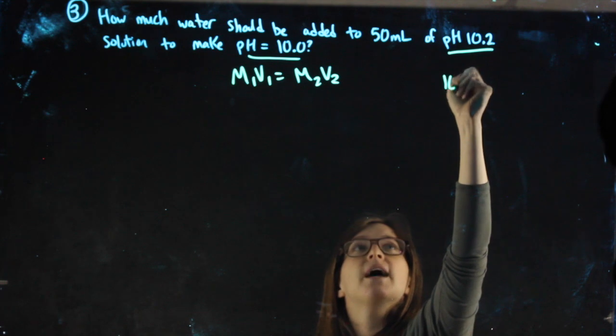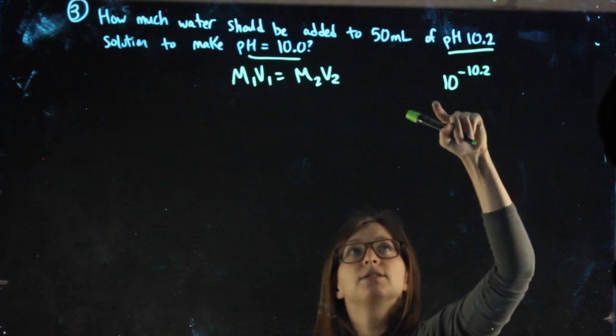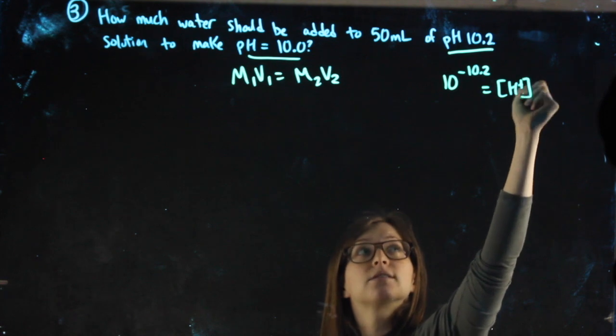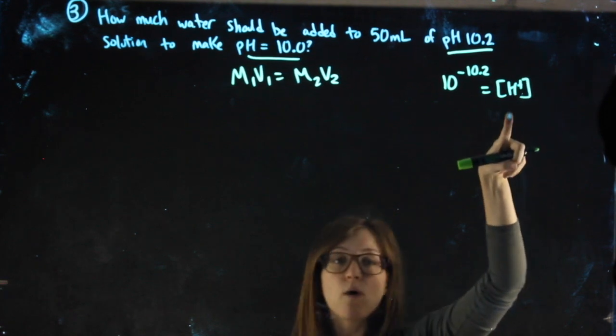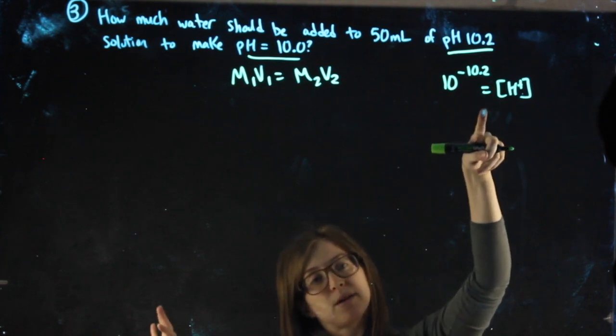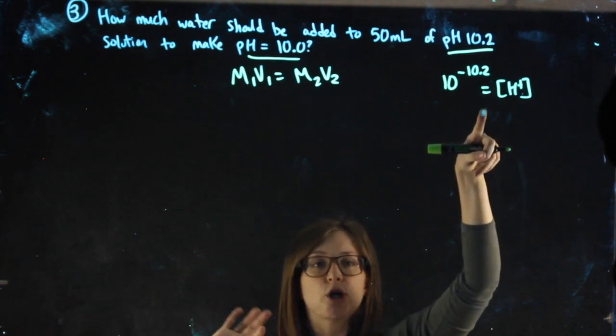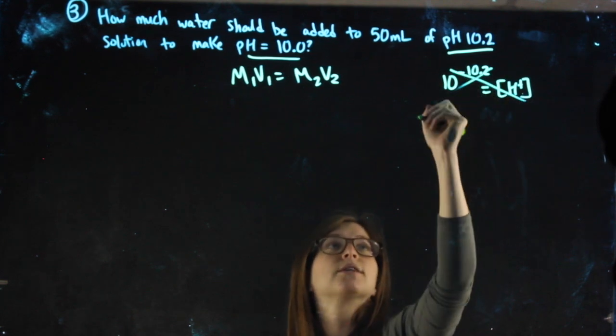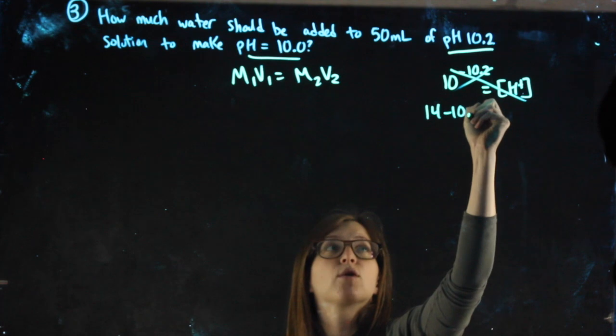So for instance, when I do 10 to the negative 10.2, 10 to the negative pH, that gets me my H+ molarity. I don't want my H+ molarity, I want my hydroxide. So from here you can plug into the formula where hydrogen times hydroxide equals 1 times 10 to the negative 14. I personally would rather just start by doing 14 minus.